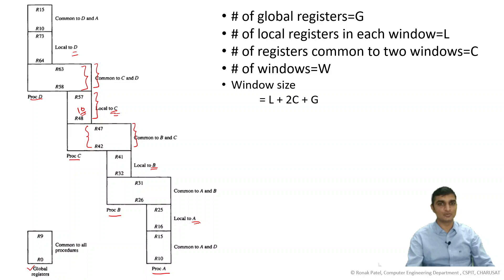If you want to find the window size, how we can find out a particular window size? Window size means how many registers are active in that. So that is how many locals are there for that process, how many adjacent registers.